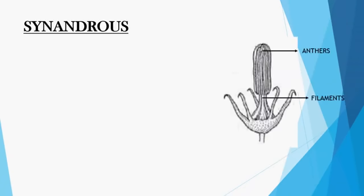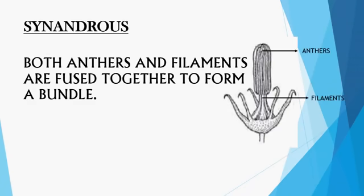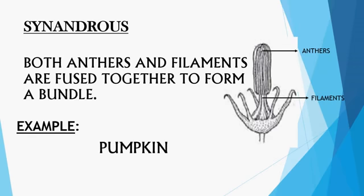The last type is synandrous, in which both the anthers and filaments are fused together to form a single bundle. To summarize: in monoadelphous, filaments are fused into one bundle; in diadelphous, filaments fuse into two bundles; in polyadelphous, filaments fuse into more than two bundles; in syngenesious, anthers are fused and filaments are free; and in synandrous, both anthers and filaments are fused together. Example: pumpkin.